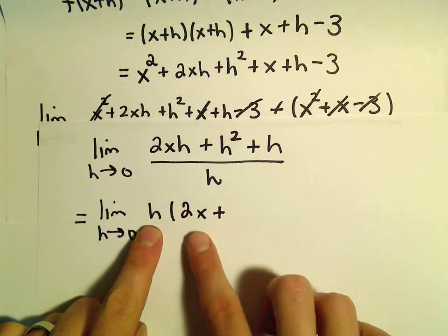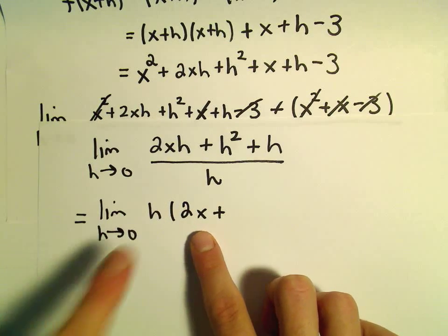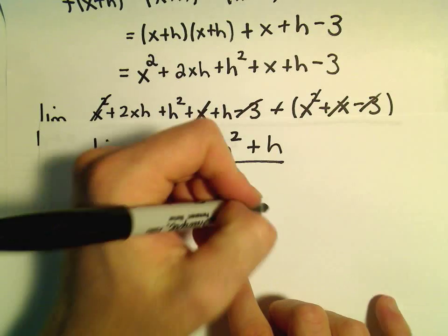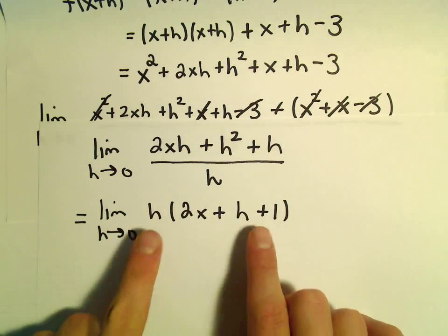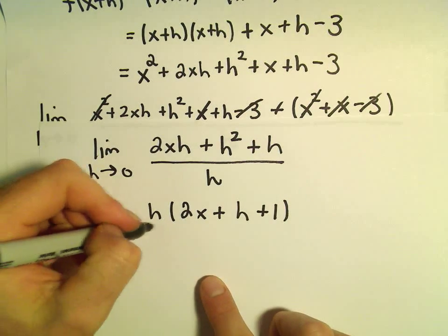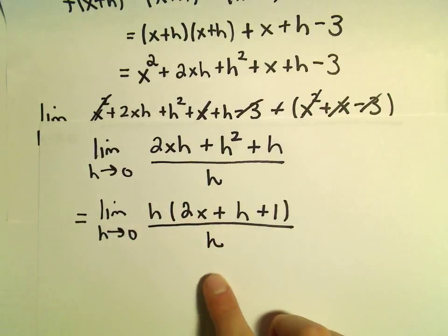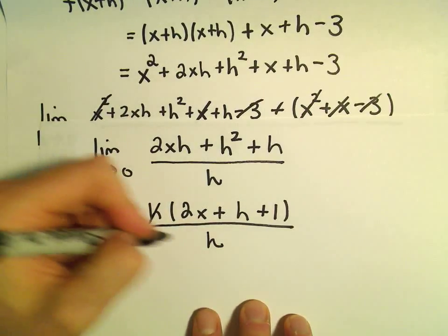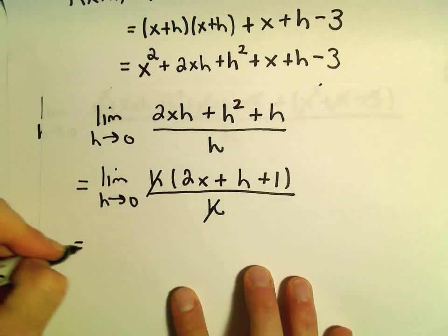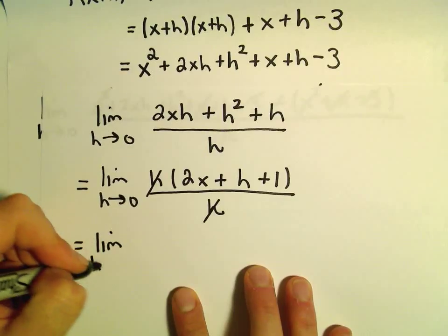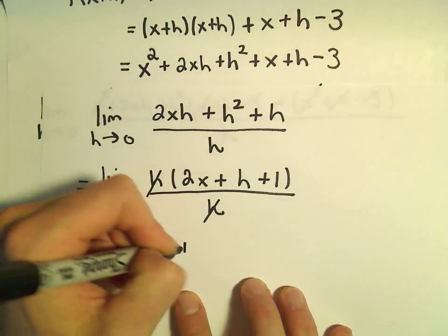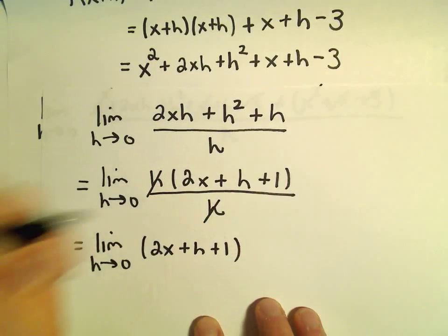So well, h times 2x would give us 2xh. h times h would give us h squared. And then h times positive 1 would give us, well, positive h. Again, we're dividing by h. Well, hey, we can just cancel those out. Now, we're left with the limit as h approaches 0 of 2x plus h plus 1.